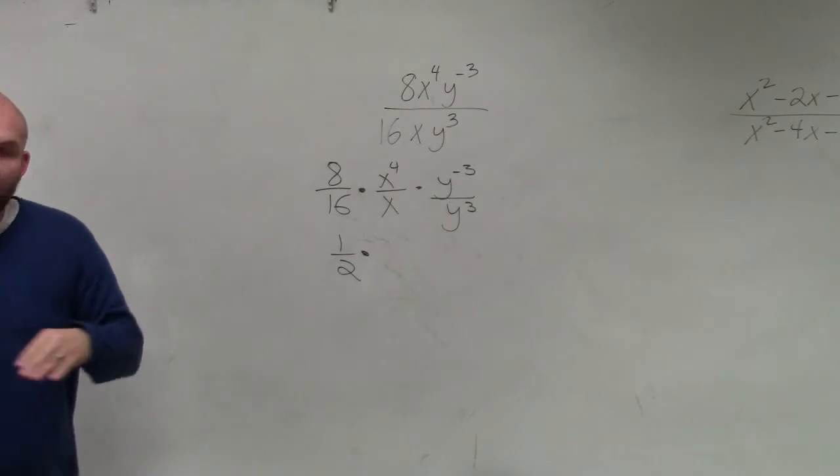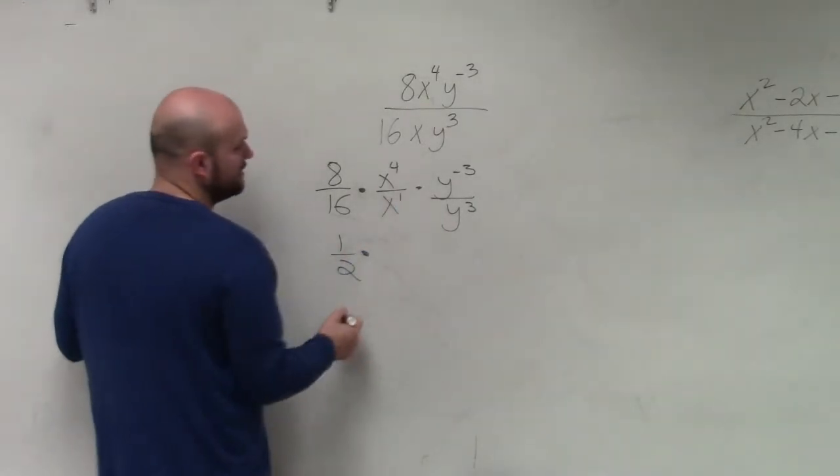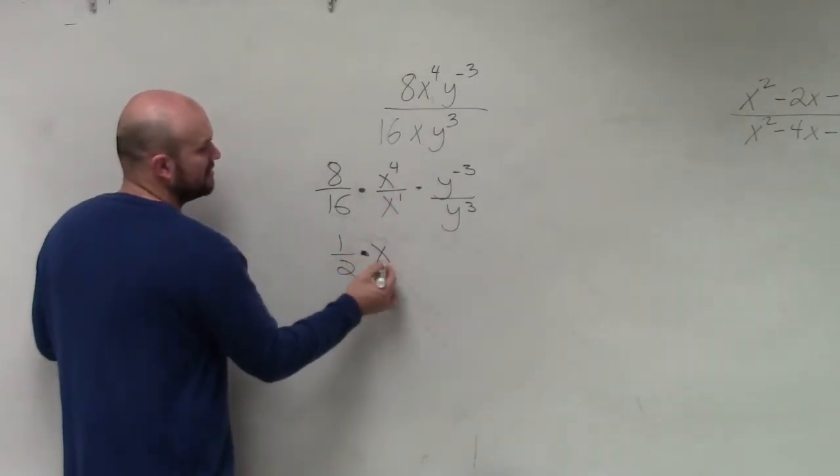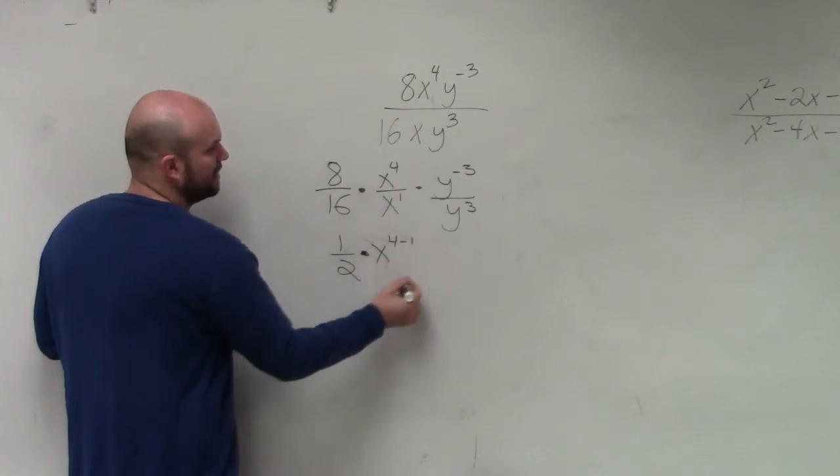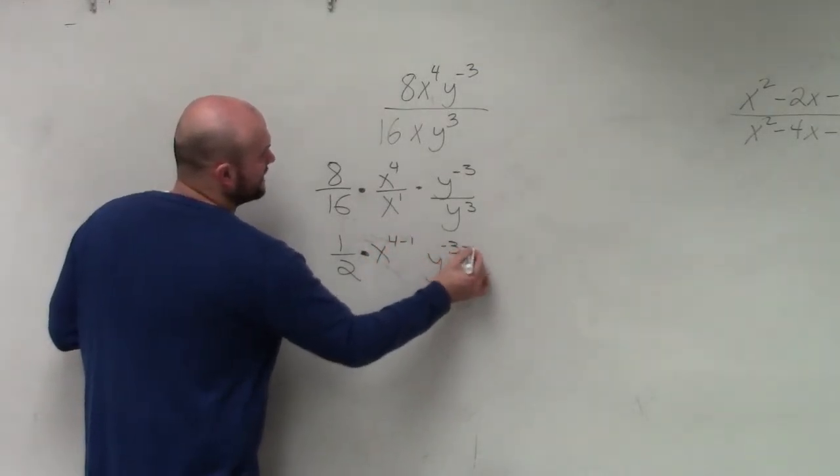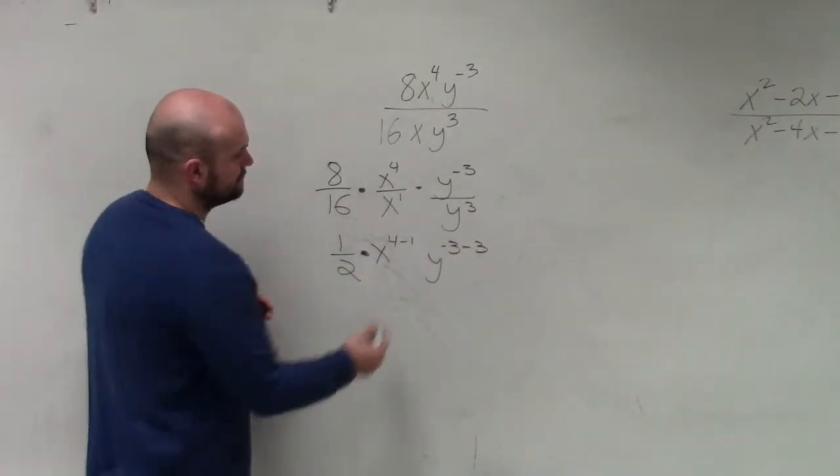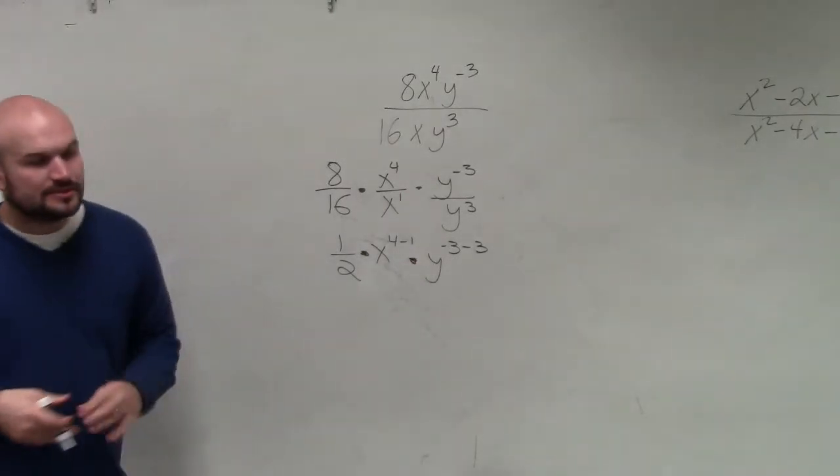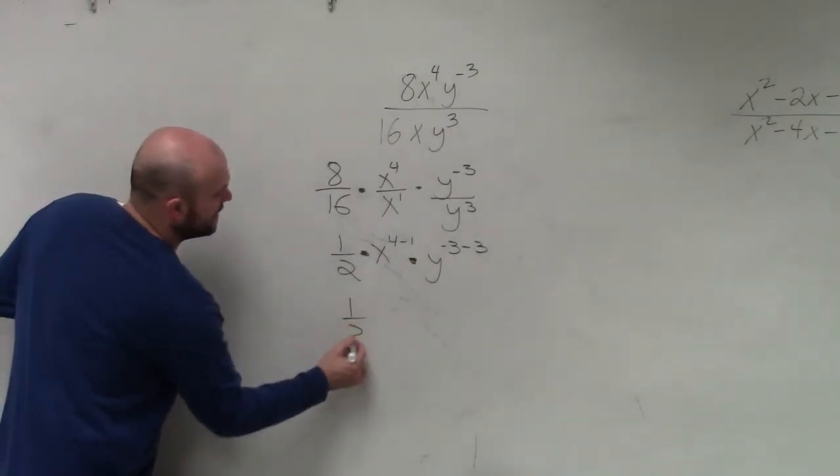And that can be reduced down to 1/2 times. Remember, when we are dividing our exponents, we are actually going to be subtracting the powers. So I have x to the 4 minus 1, and I have y to the negative 3 minus 3.